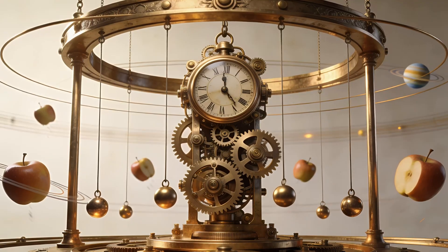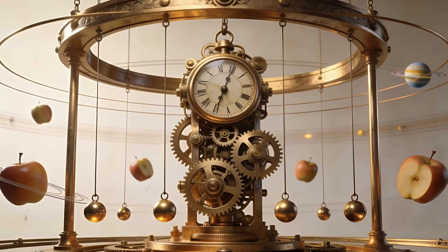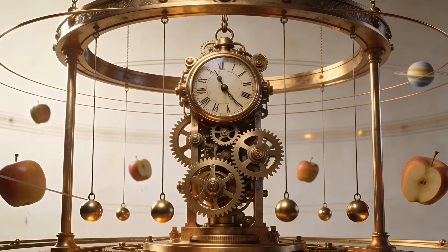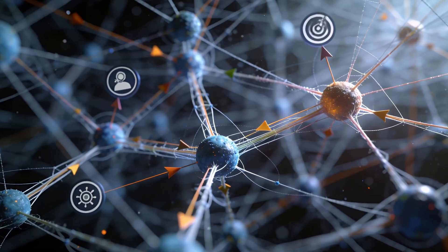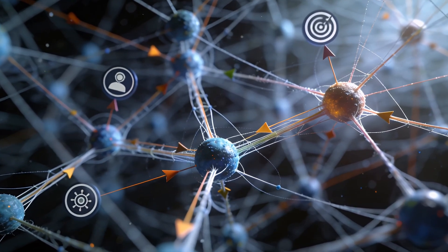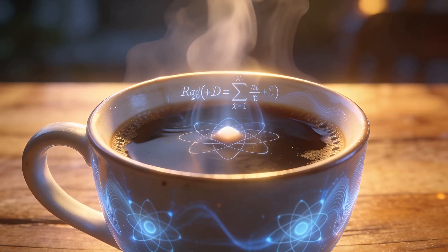But the deepest impact is on our worldview. Classical physics says the world ticks like a clock, predictable and solid. Quantum mechanics says no. It's probabilistic, interconnected, and observer dependent. Reality isn't fixed out there. It's emergent, shaped by how we probe it.